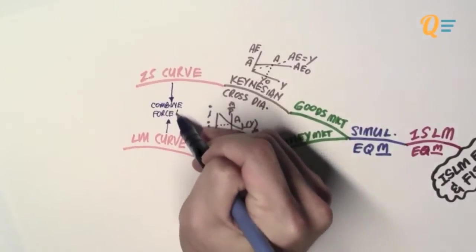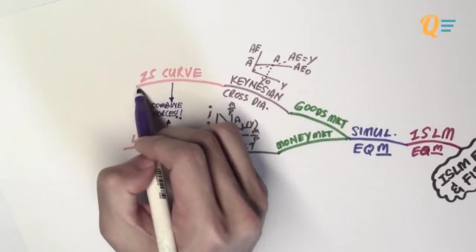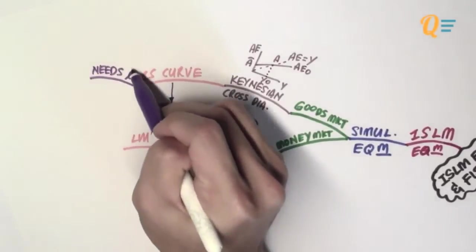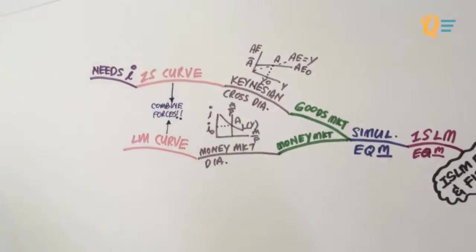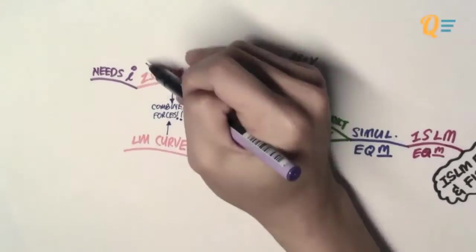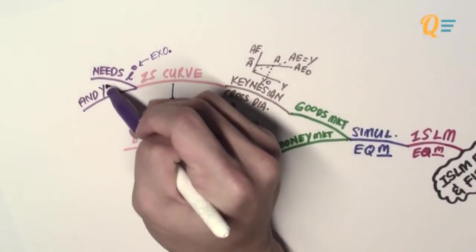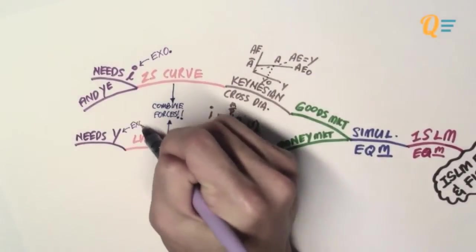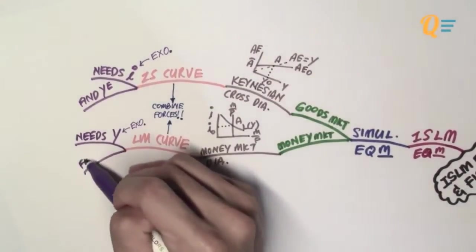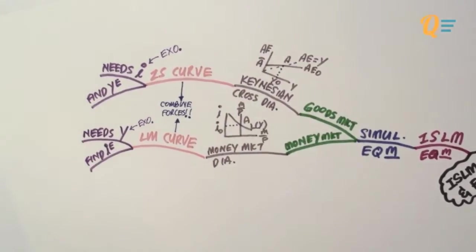The Keynesian cross diagram helps us derive the IS curve, and the money market diagram helps us derive the LM curve, and we combine these two curves to get the IS-LM model. To derive the IS curve, you need a level of interest rates, which is exogenous to the Keynesian cross diagram — it's not on either axis — so it's known as an exogenous variable. Similarly, to derive the LM curve, you need the income level, which is exogenous to the money market diagram, so that you can find your equilibrium level of interest rates.